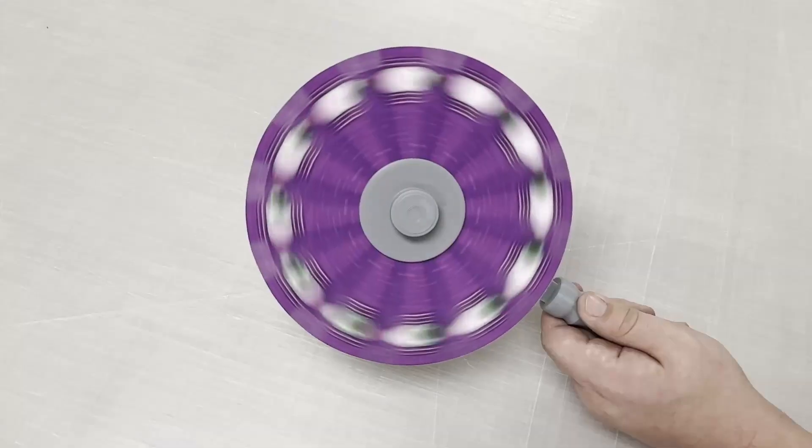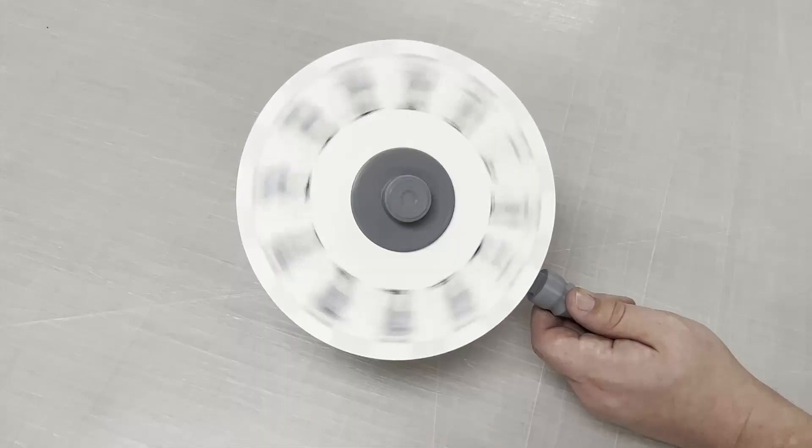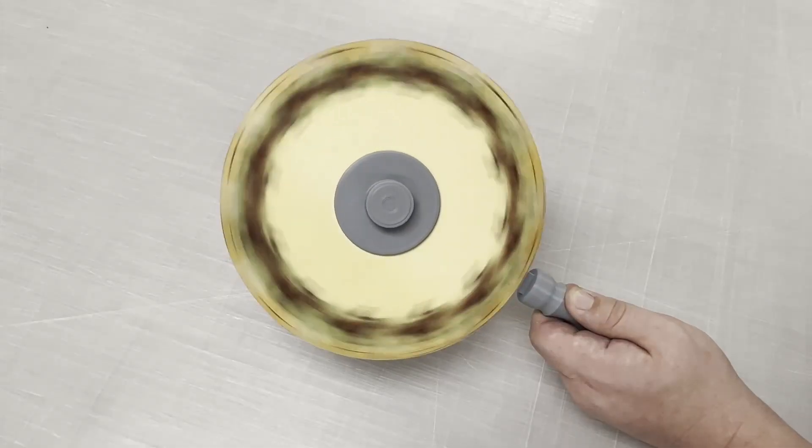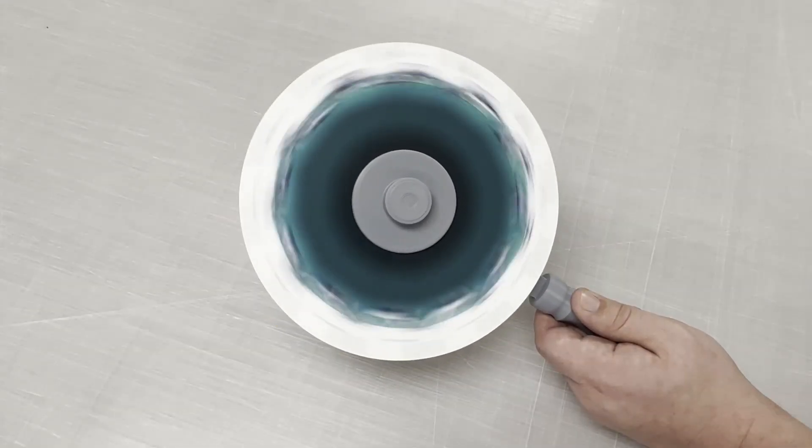The phenakistoscope was invented in 1832. It was the first device to ever produce a fluid illusion of motion and ultimately led to the development of the film and animation technology that we know today.